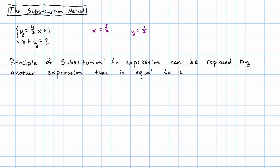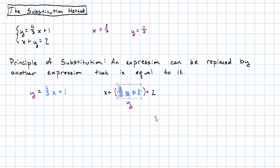Well, the first equation tells us that y is equal to this expression with an x in it. What we're going to do is, in the second equation, take out the y, and instead of the y, put in this expression that's equal to y. The first equation tells us that y and four-thirds x plus one represent the same number. So anywhere we see a y in the second equation, we can write four-thirds x plus one instead.